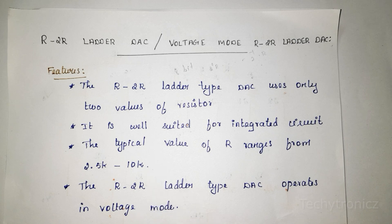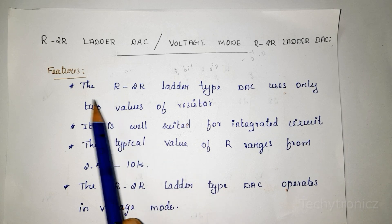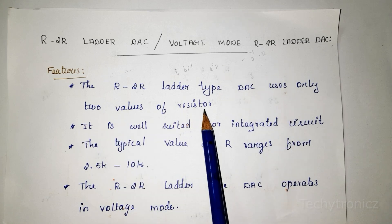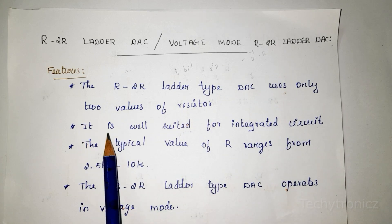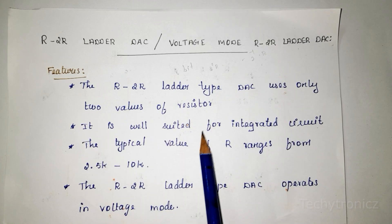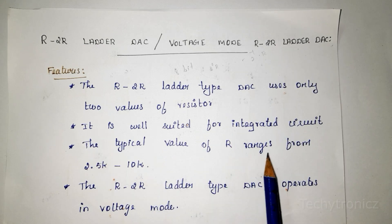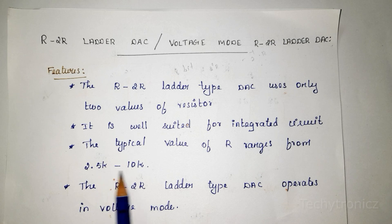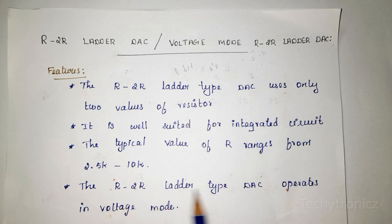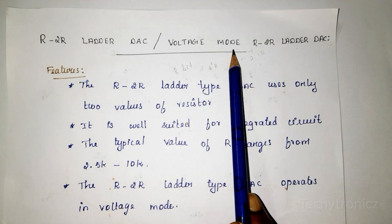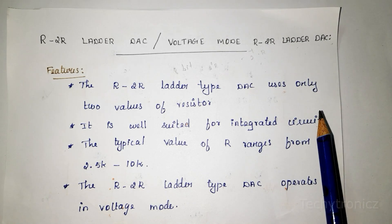Let us see the features of the R2R Ladder type. The R2R Ladder type DAC uses only two values of resistor. It is very well suited for integrated circuits. The typical value of R ranges from 2.5k to 10k. The R2R Ladder type DAC operates in voltage mode, so the name is voltage mode R2R Ladder DAC.